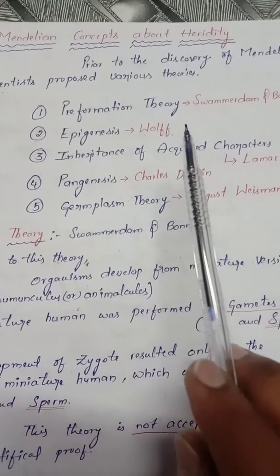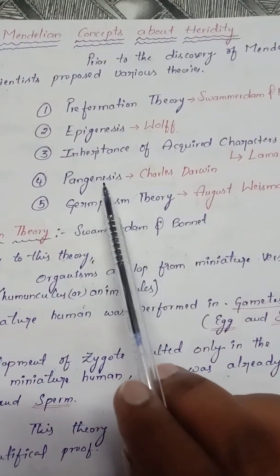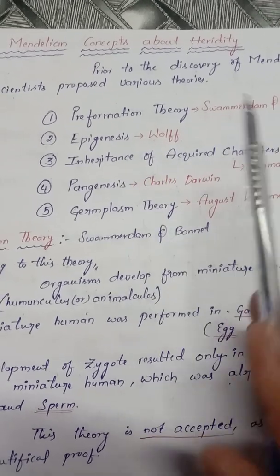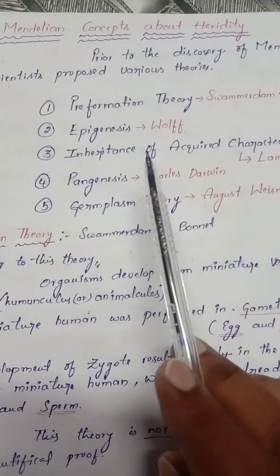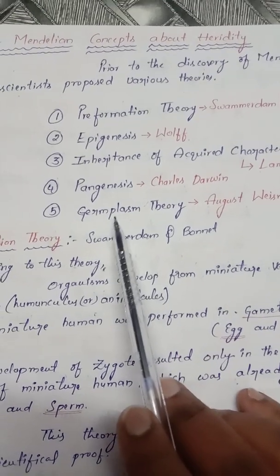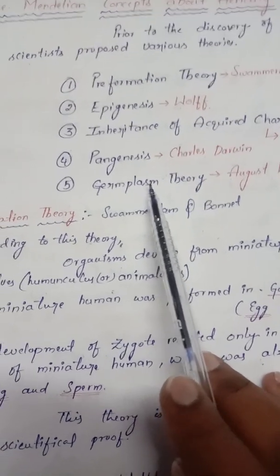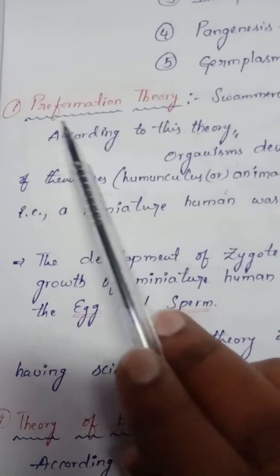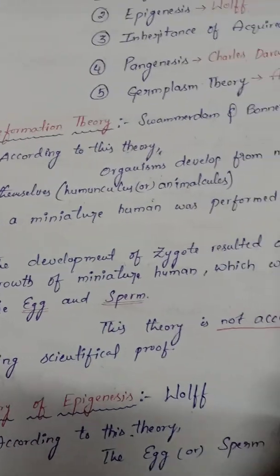Among these five theories, only two theories are universally accepted and the remaining three are not accepted because of not having scientific proof. Today we will discuss all five theories one by one. First, let us come to preformation theory given by Swammerdam and Bennett.